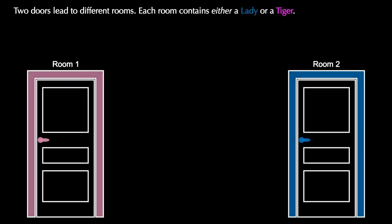A classic lady or tiger puzzle has two doors leading to two different rooms. Each room contains either a lady or a tiger. Each door also contains a proposition, which is either a true or a false statement, and the goal is to locate the lady.